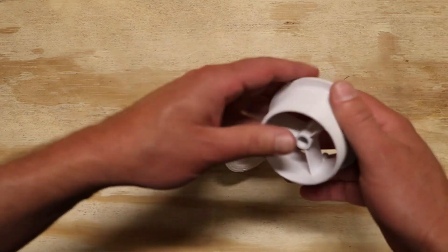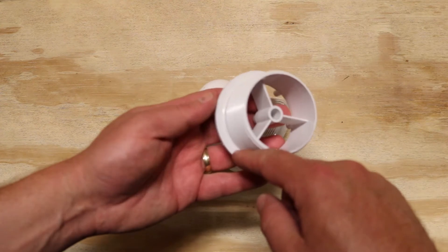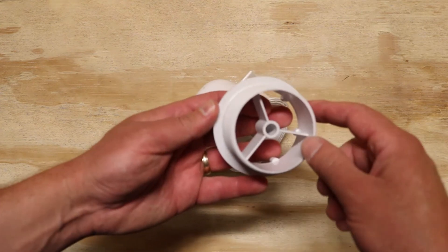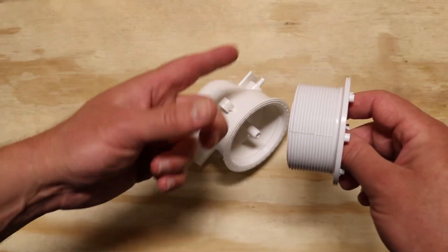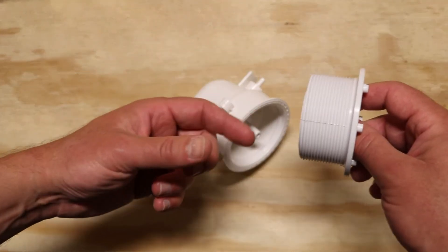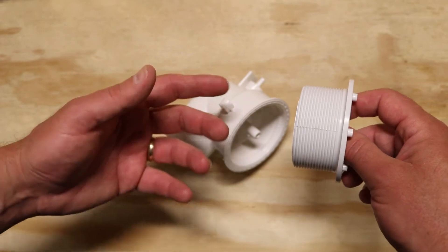Of course, make sure you clean off all the old silicone and any debris and biofilm that might be stuck to the wall of the tub before you install the new one. So when that's all nice and clean, put the wall flange through.